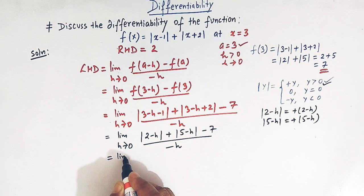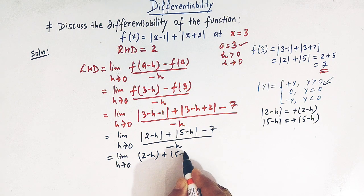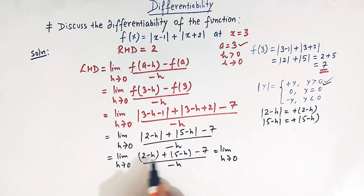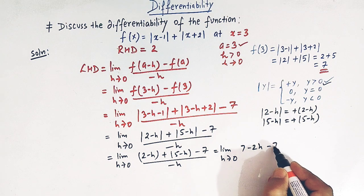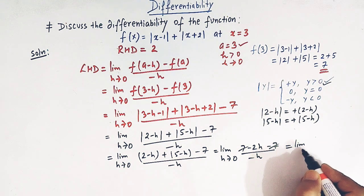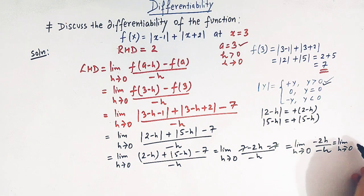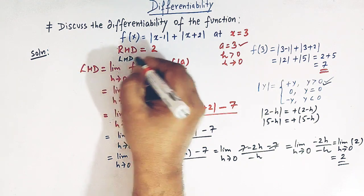So we write: limit h tends to 0 of [(2 - h) + (5 - h) - 7] / (-h) = limit h tends to 0 of [7 - 2h - 7] / (-h) = limit h tends to 0 of (-2h) / (-h). The (-h) terms cancel, giving limit h tends to 0 of 2, which equals 2. So the left hand derivative at x = 3 is 2.